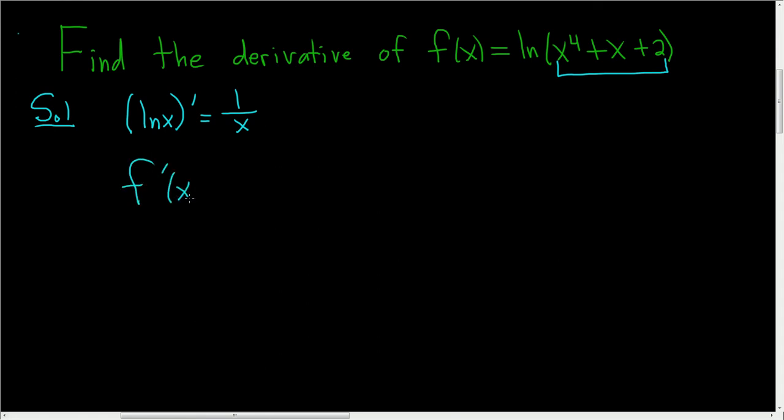So here when we take the derivative, it's 1 over whatever you see here, so x to the fourth plus x plus 2, times the derivative of this piece here, the derivative of the inside.